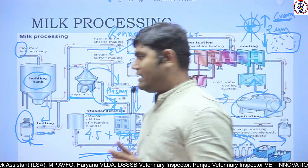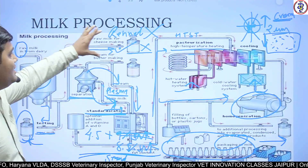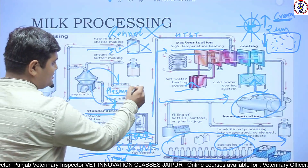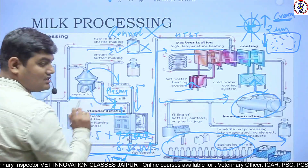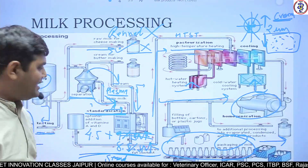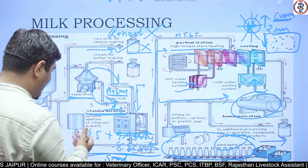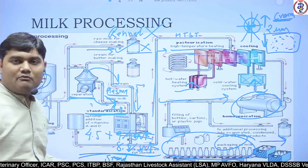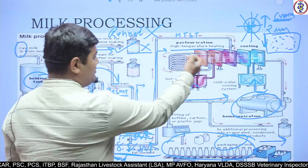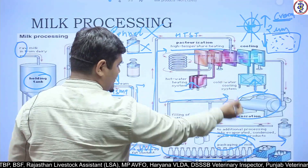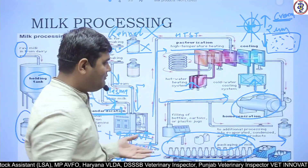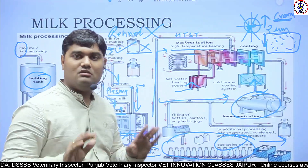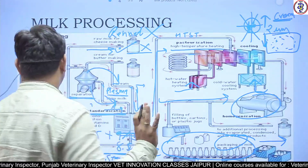In summary: from collection and testing, the milk goes for cheese making, then cream separation. Cream and the SNF source — plasma or skim milk — are separated. Different combinations are made for standardization, followed by pasteurization. Homogenization is an optional process based on your requirement, and after that the milk goes for packaging.